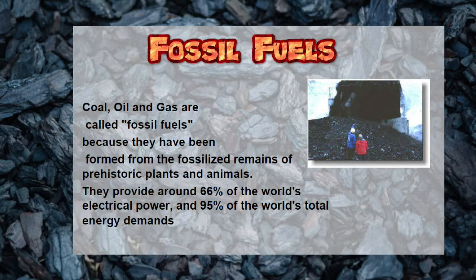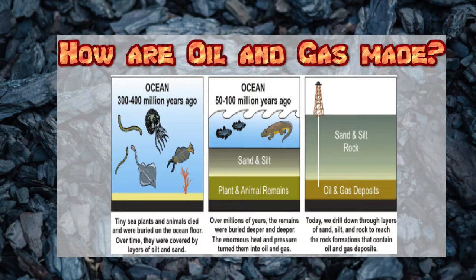Fossil fuels — coal, oil, and gas — are called fossil fuels because they're made from the fossilized remains of prehistoric plants and animals, and they provide a lot of the energy needs for everybody on earth. Here's a graphic that demonstrates how oil and gas are made. Animals and plants from many years ago died and were buried on the ocean floor. Their remains get buried deeper and deeper, and an enormous amount of heat and pressure turns them into oil and gas. Today we can drill down through those layers of sand and rock, find the oil and gas deposits, bring them to the surface, and process them into a form useful for energy.